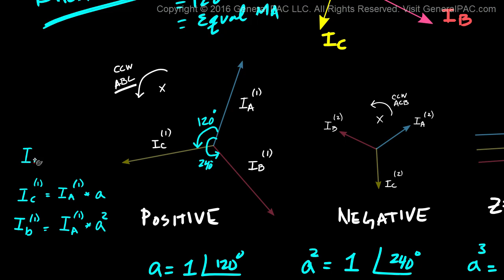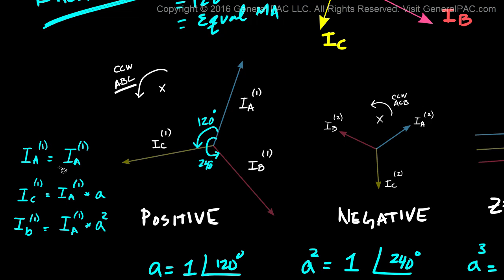IA positive sequence is the reference phasor, so we don't need to rotate it. It's already at whatever phase it is, so we're using this as a reference and we don't need to rotate it in any direction.